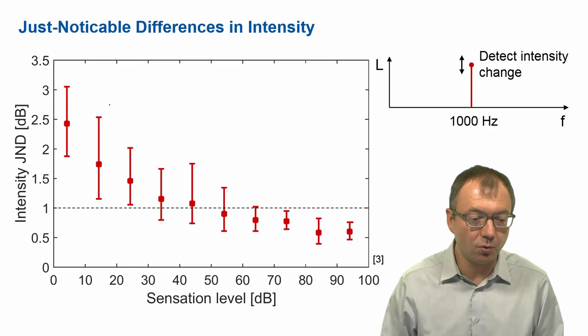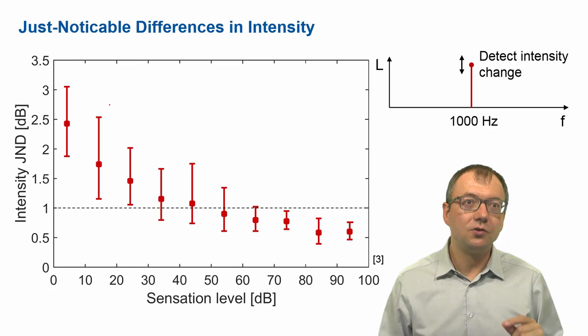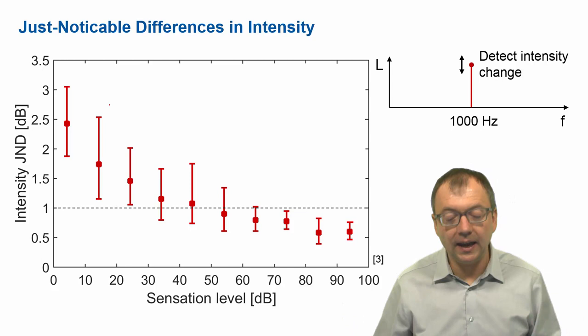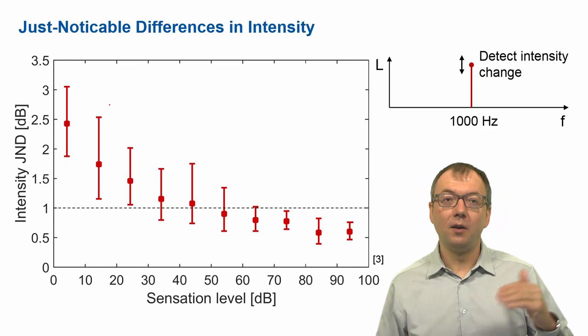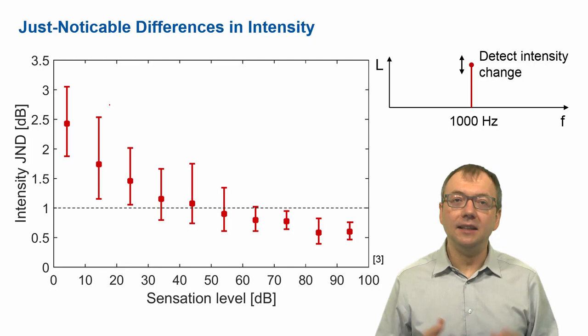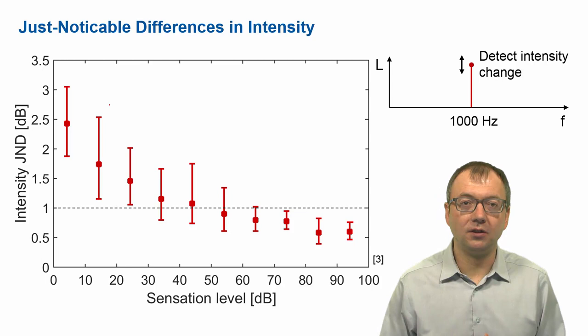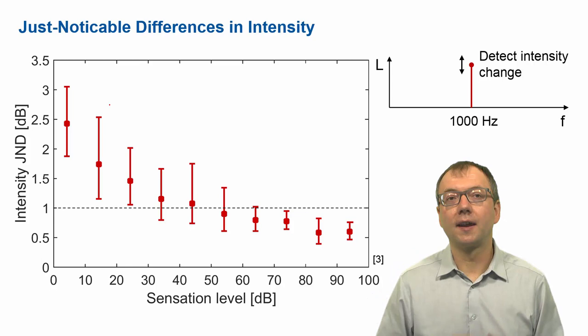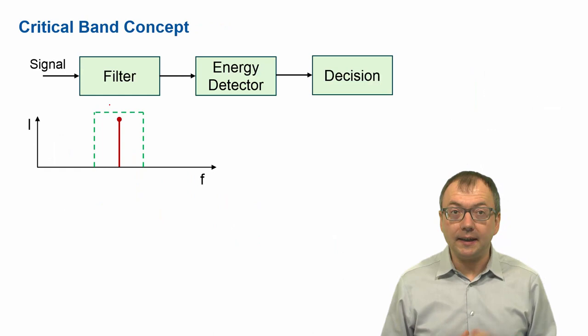If you're just above the threshold, your sensitivity to level differences is still a bit poor — the tone has to be changed by about 2 dB to just notice a change in intensity. But in the main region of levels we usually consider, from 30 to 70–80 dB, our sensitivity is about 1 dB. So a change of 1 dB in intensity is just detectable; changes below that we cannot hear. This gives the idea that masking at the output of an auditory filter will be produced by a change in the probe's energy at the output of the filter that has to overcome this 1 dB threshold.